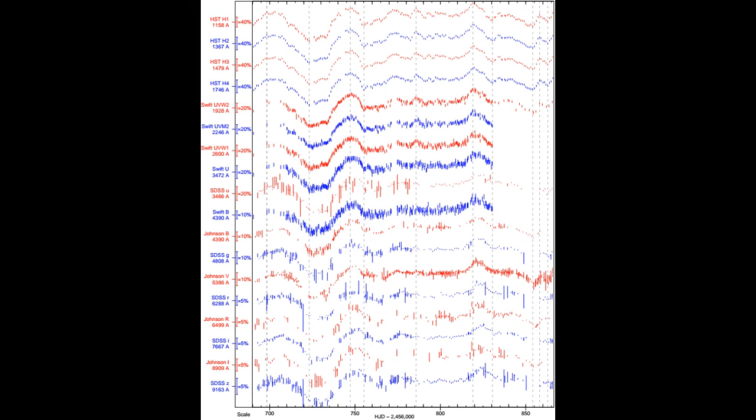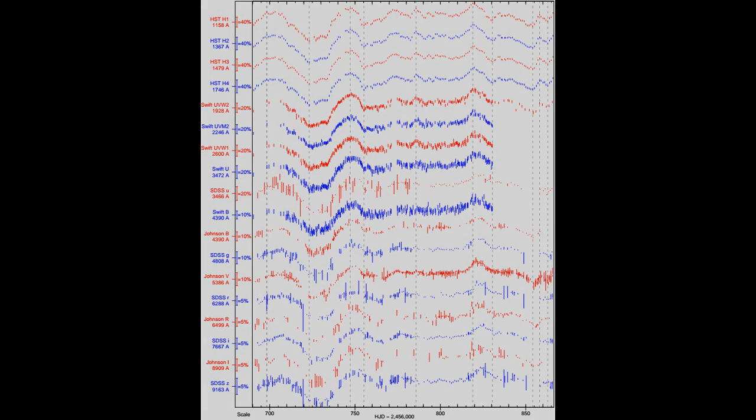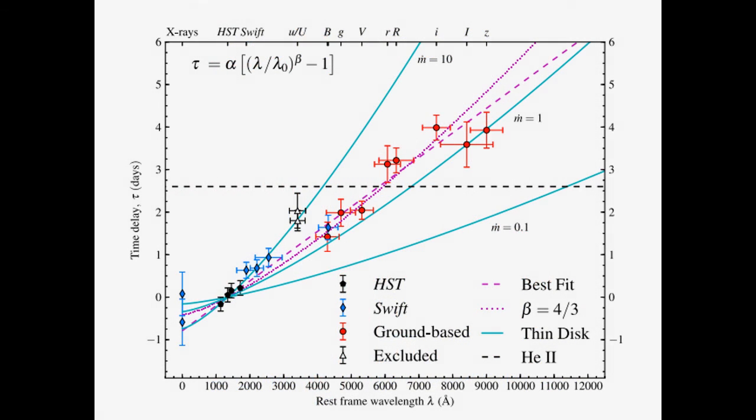We measure the time delay between light curves using cross-correlation techniques, and, following papers 1 and 2, we measure all lags relative to the HST 1367 angstrom light curve. This figure shows the relation between time delays and pivot wavelengths of the filters, corrected for cosmological time dilation. There is a clear trend, with larger lags for light curves at longer wavelengths.